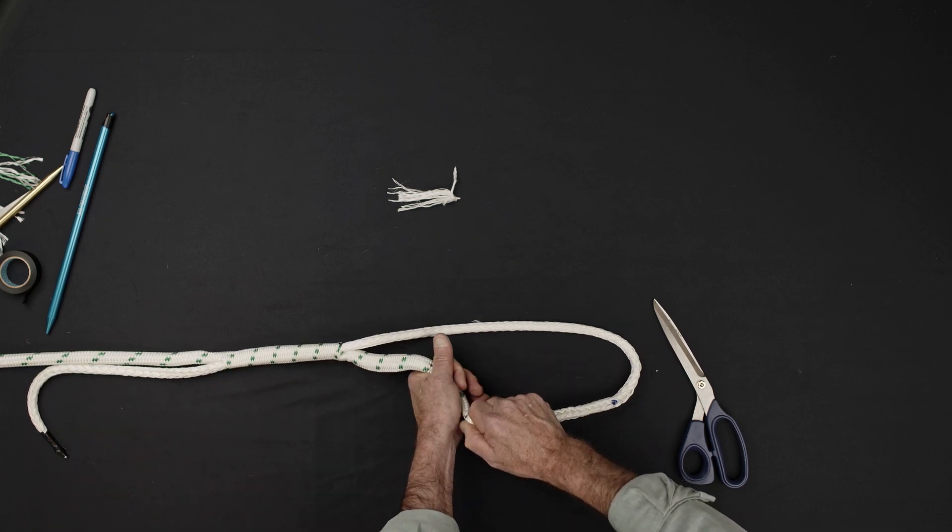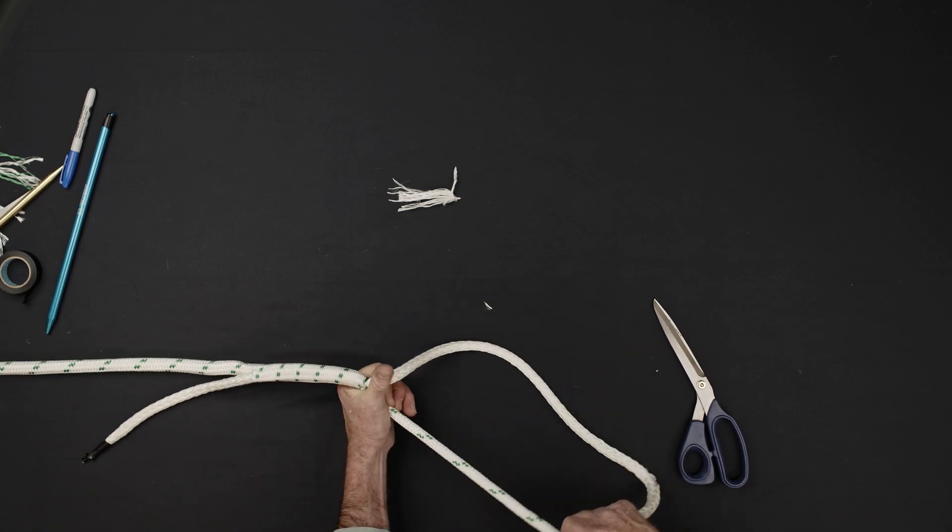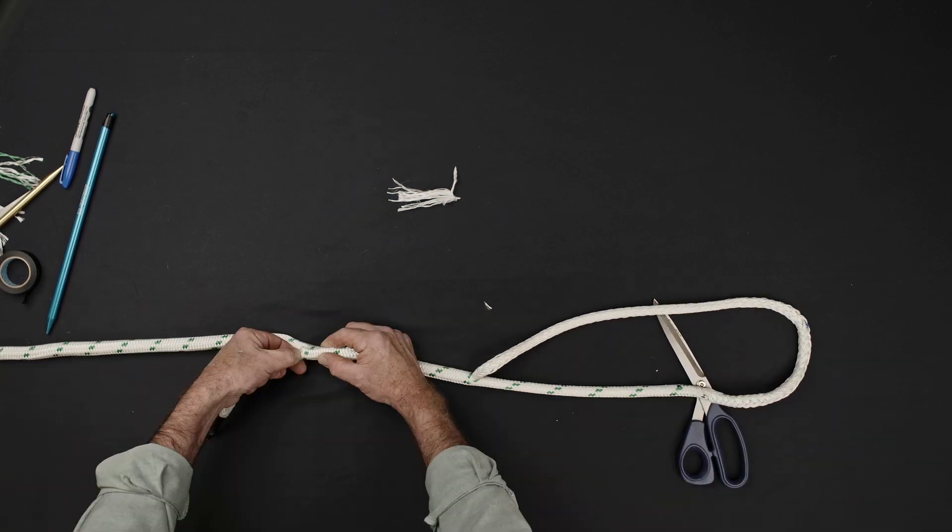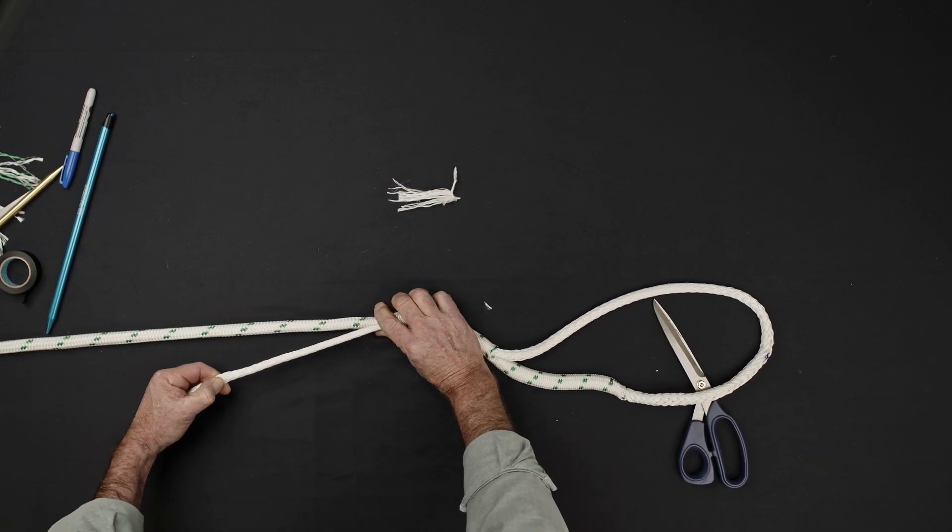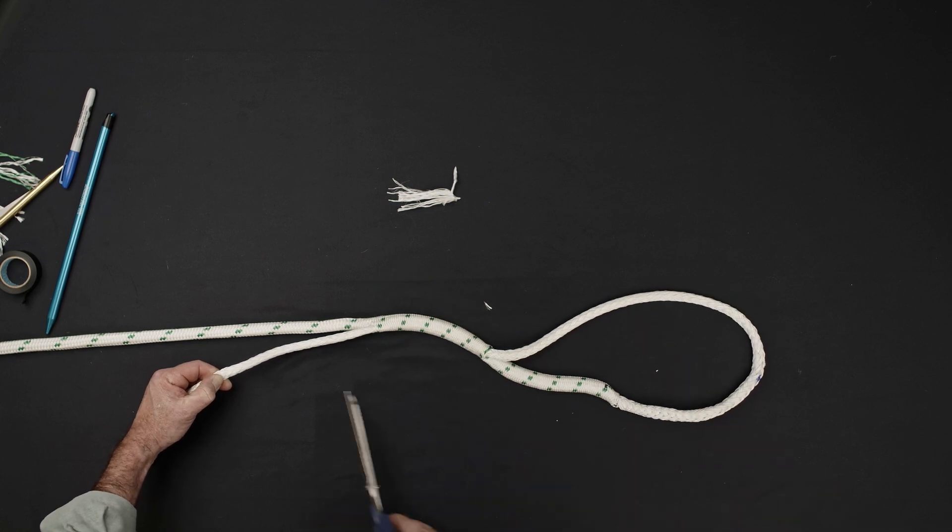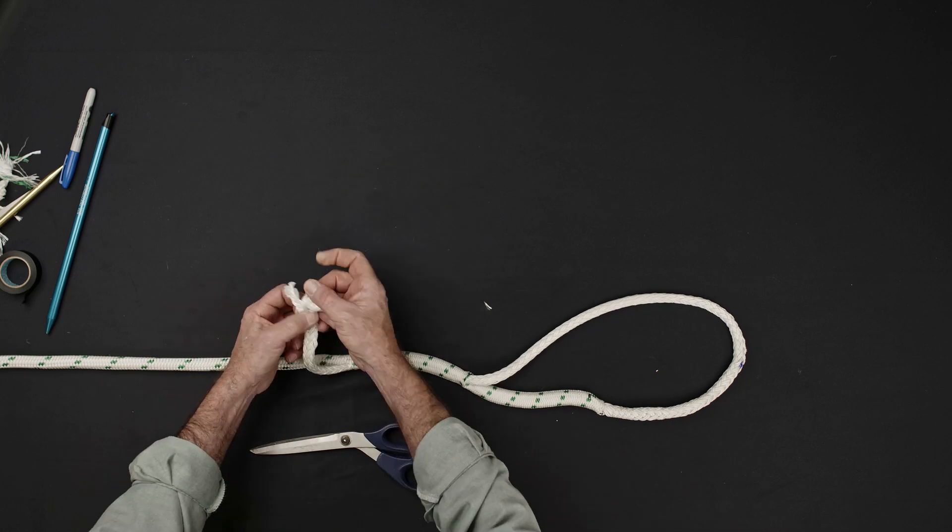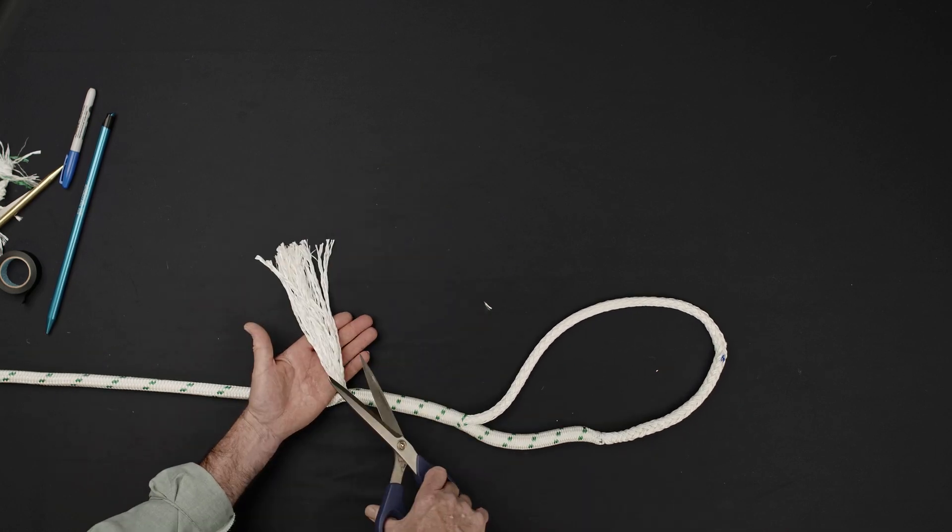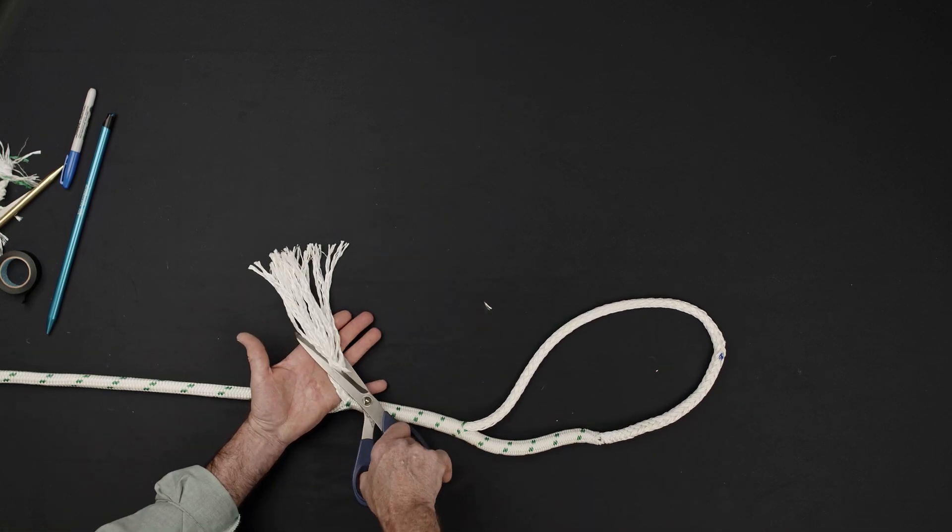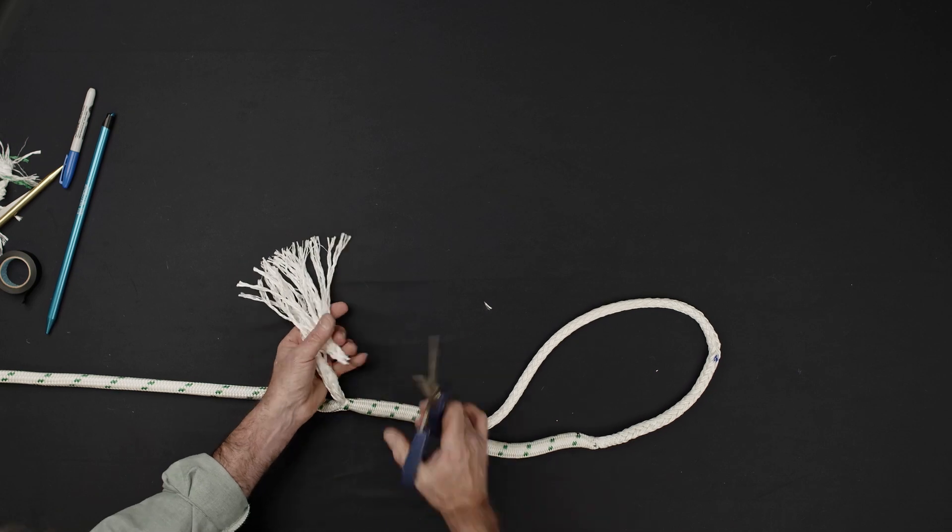Working away from the center of the eye, milk the cover back, pulling in the tail of the core. Grab the core from the point where it exits the rope and extract a short length. Cut the core at this point. Unravel a short length of the core and cut a gradual taper along its length.